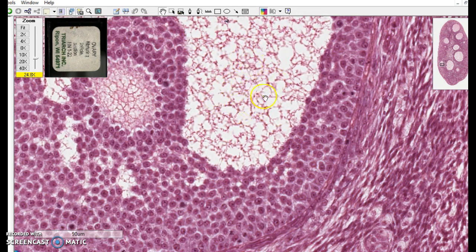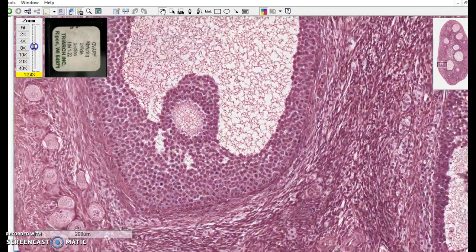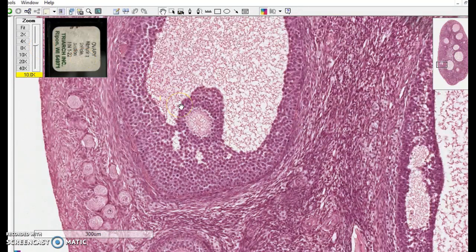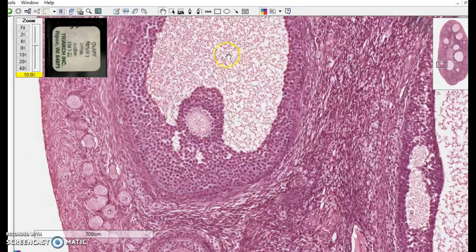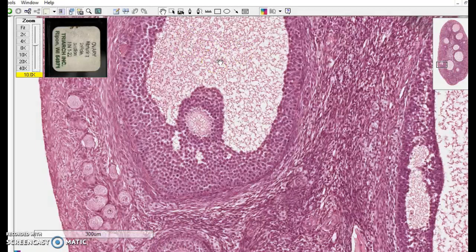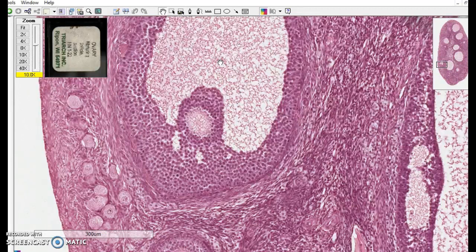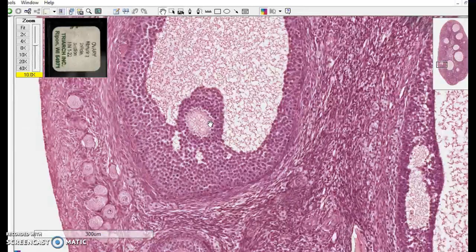This, again, is liquid. And the way this works is as an egg is maturing and getting ready to ovulate, the follicle fills up with fluid and the fluid continues to accumulate until essentially it bursts and the egg goes flying out of the ovary to get drawn into the fallopian tube.